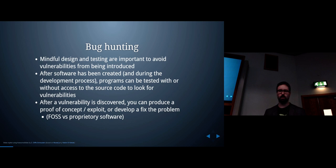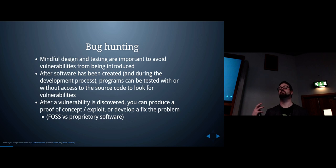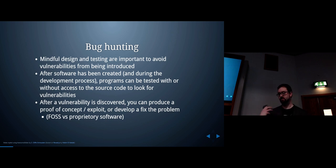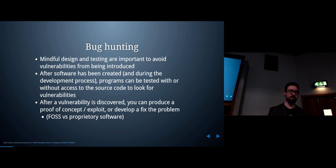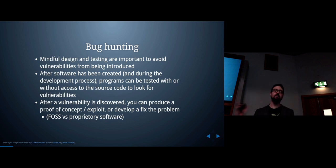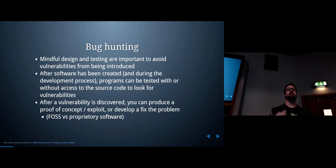Obviously we want to avoid introducing bugs into software in the first place — we'd prefer not to have insecure, vulnerable software. If you're in charge of developing software or part of a team developing software, there are things you can do to minimize the chance of introducing a security problem when programming or designing. Part of that is making sure you are thinking about security when designing the system, and we'll talk more about that next year — ways of designing systems to be more secure and modeling a system to figure out where security problems might exist.